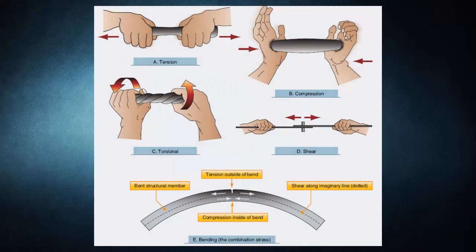Aircraft structural members are designed to carry a load or to resist stress. In designing an aircraft, every square inch of wing and fuselage, every rib, spar, and even each metal fitting must be considered in relation to the physical characteristics of the material of which it is made. Every part of the aircraft must be planned to carry the load imposed upon it. The determination of such loads is called stress analysis. Although planning the design is not the function of the aircraft technician, it is important that the technician understand the stresses involved to avoid improper repairs. Stress is a material's internal resistance, or counterforce, that opposes deformation, while strain is the degree of deformation of a material.